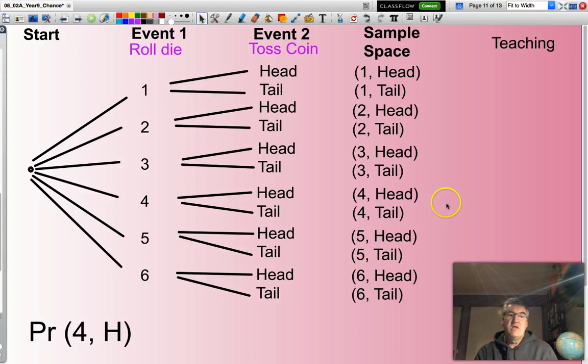So if I'm looking for the probability of a four followed by a head, I go through my list, my sample space. How many of those are four followed by a head? Well, there's one here.